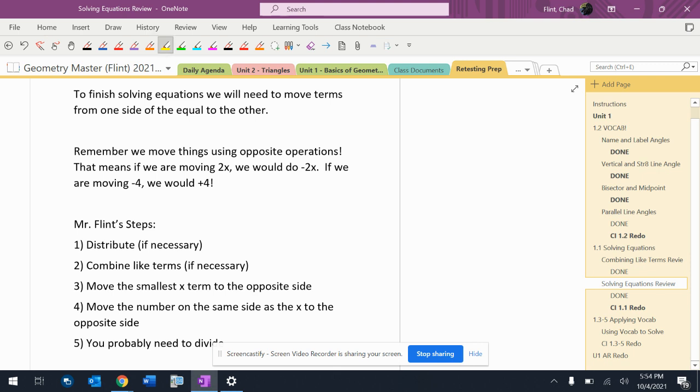The biggest thing is we have to move things using opposite operations. So what I mean by that is if we have a 2x and we want to move it, we need to use a negative 2x to move it, a minus 2x. If we had a minus 4 and we want to move it, we move it by adding 4.